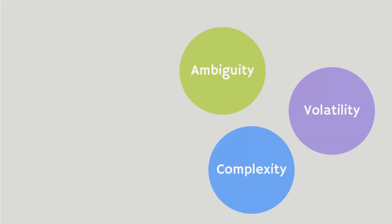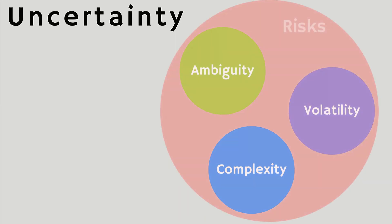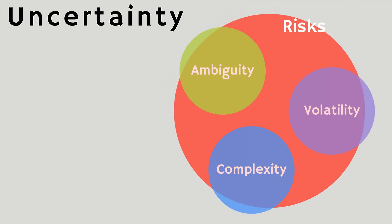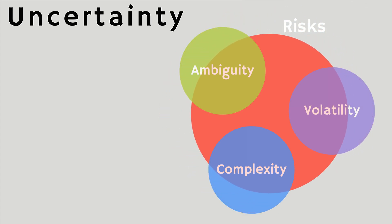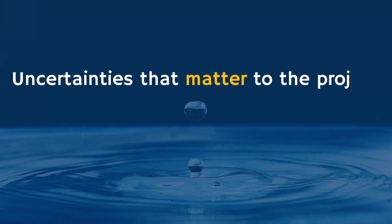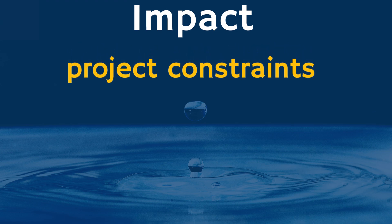So far we saw that ambiguity, complexity, and volatility are shades of uncertainty. Are these conditions risks? The answer is not necessarily. For any uncertainty to be classified as a risk, there are two main conditions to be met. First, risks are uncertainties that matter to the project — the uncertainties must have an impact on the project objectives or constraints to be called risks.